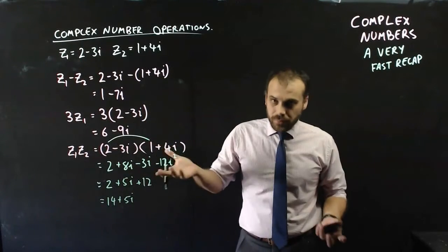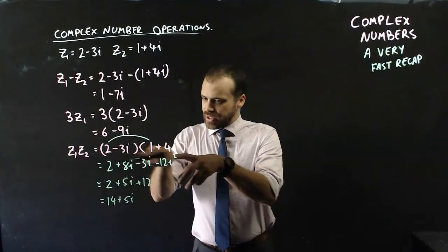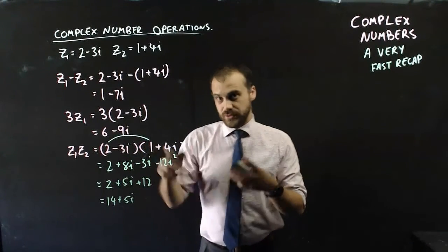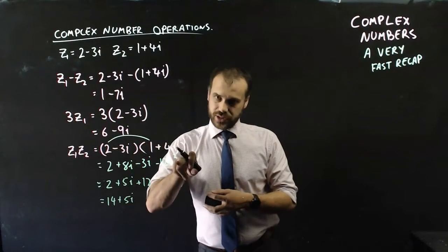Whenever you multiply two complex numbers together, this funky thing here is going to happen, where if that's negative, it's going to become positive, and if that's positive, it's going to become negative because of that i squared.